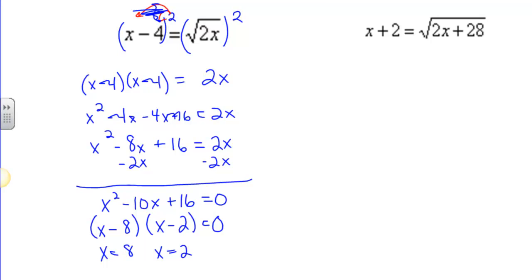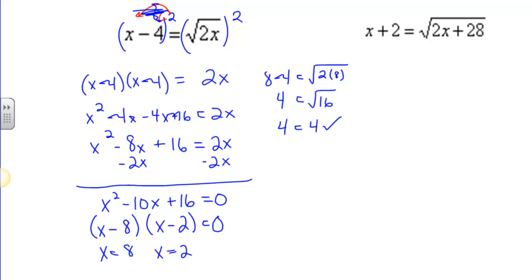This is where checking comes into play. If I do 8 minus 4 equals the square root of 2 times 8 — 8 minus 4 is 4, 2 times 8 is 16, square root of 16 is 4. So x equals 8 works; this is one solution. The other one: 2 minus 4, with the square root of 2 times 2.